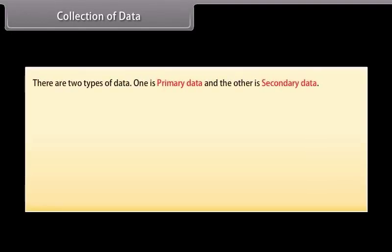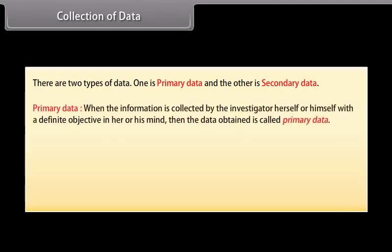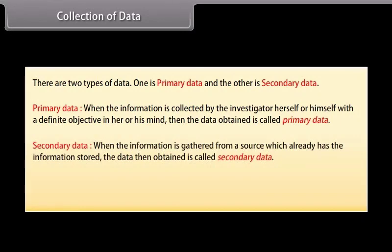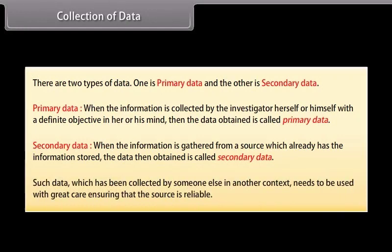Collection of data. There are two types of data: one is primary data and the other is secondary data. Primary data: when the information is collected by the investigator herself or himself with a definite objective in her or his mind, then the data obtained is called primary data. Secondary data: when the information is gathered from a source which already has the information stored, the data then obtained is called secondary data. Such data needs to be used with great care, ensuring that the source is reliable.